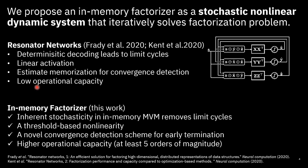This is what we present today — the in-memory factorizer. These are the salient features of our work: it relies on inherent stochasticity to get rid of so-called limit cycles, it introduces a certain nonlinearity based on a very simple threshold-based mechanism, and for convergence detection we develop new techniques that allow us to terminate early with the right results. Overall, with these new modifications we achieve high operational capacity — at least five orders of magnitude increase in the problem sizes we can solve.